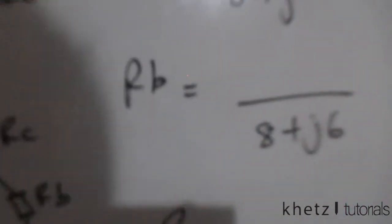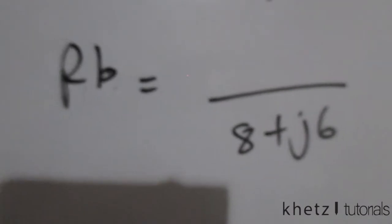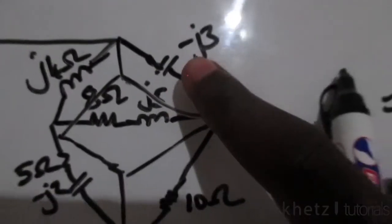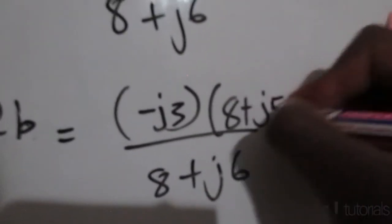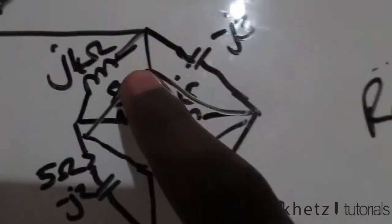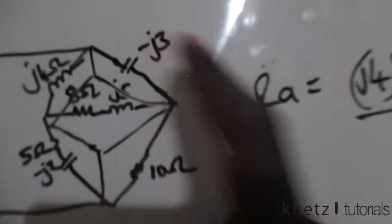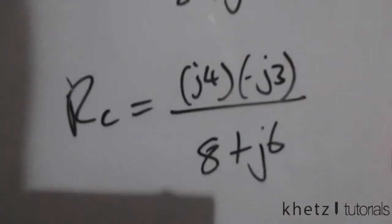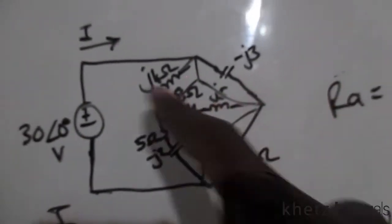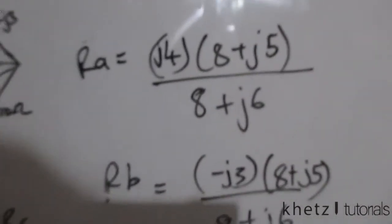To find RB, which would be situated somewhere here, you look at the two impedances it finds itself between: negative J3 and J4, so you multiply J4 and negative J3. For RC, which finds itself in between J4 and negative J3, you multiply J4 and negative J3, dividing by the same sum of all impedances forming the delta. Just punch all of these into your calculator.